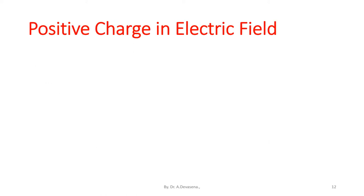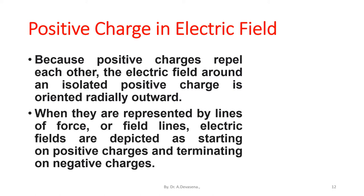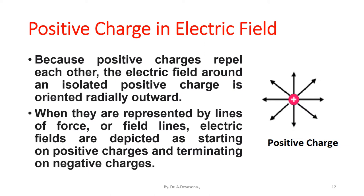Because positive charges repel each other, the electric field around an isolated positive charge is oriented radially outward when represented by lines of force. Electric field lines are depicted as starting on positive charges and terminating on negative charges. Here is a representation of a positive charge.